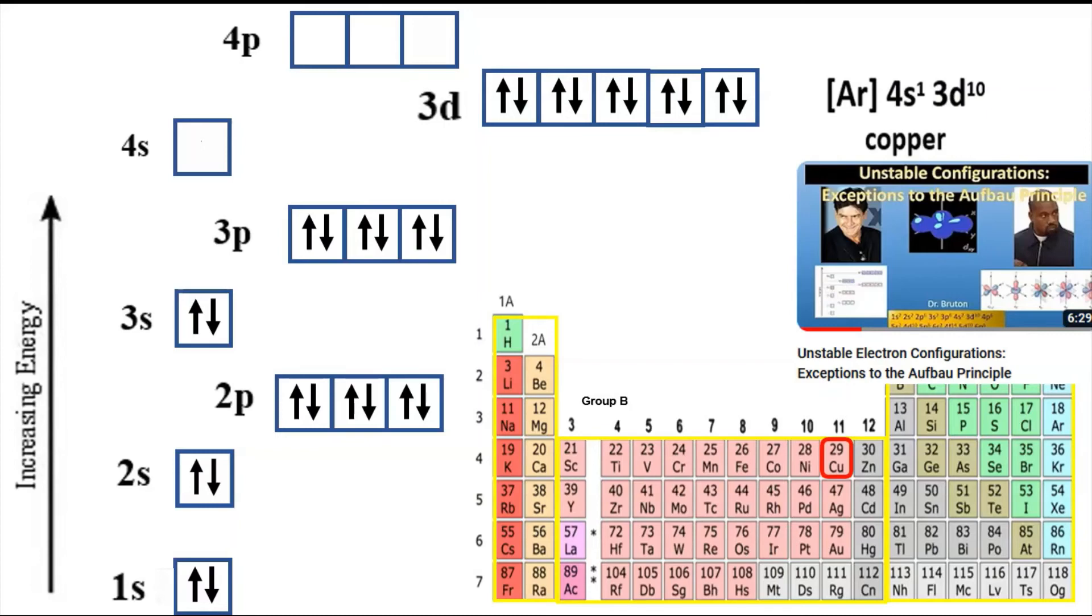When you lose that one electron to form an ion, it's going to end up being Ar 3d10 just like zinc was, but with the exception of course that the copper atom has only lost one electron so it'll have a positive one charge. You end up getting the entire third energy level completely filled, which is very stable, which is one of the characteristic traits of a pseudo noble gas configuration.